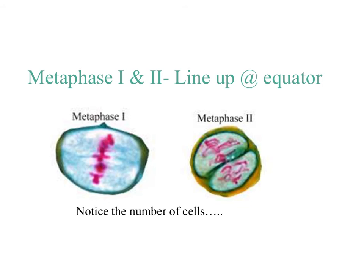The next stage is metaphase, where the chromosomes still line up at the equator — the same thing that happens in mitosis. In metaphase 1, there is one cell, and in metaphase 2, there are two cells.